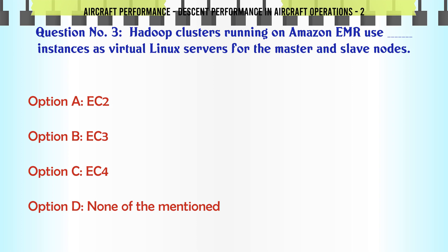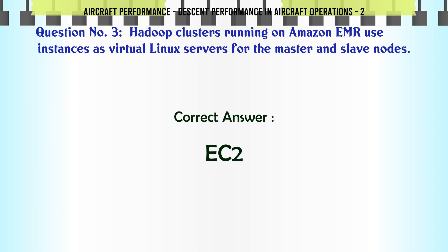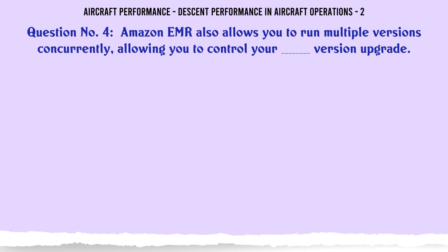Hadoop clusters running on Amazon EMR use instances as virtual Linux servers for the master and slave nodes. a) EC2, b) EC3, c) EC4, d) None of the mentioned. The correct answer is EC2.